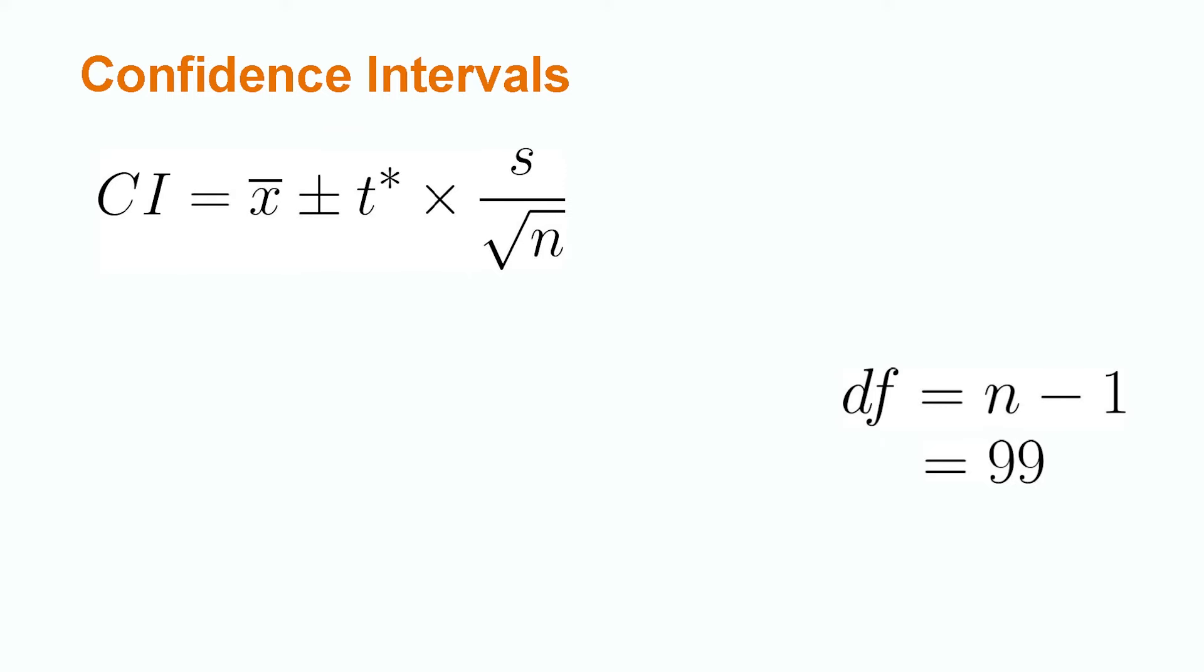We now have what we need to find our value of t*. Using Excel's T.INV.2T function, we input our alpha value first and then our degrees of freedom. This gives us a value of 1.984. Please keep in mind that other statistical software packages can be used to find the value of t* as well as a t table.